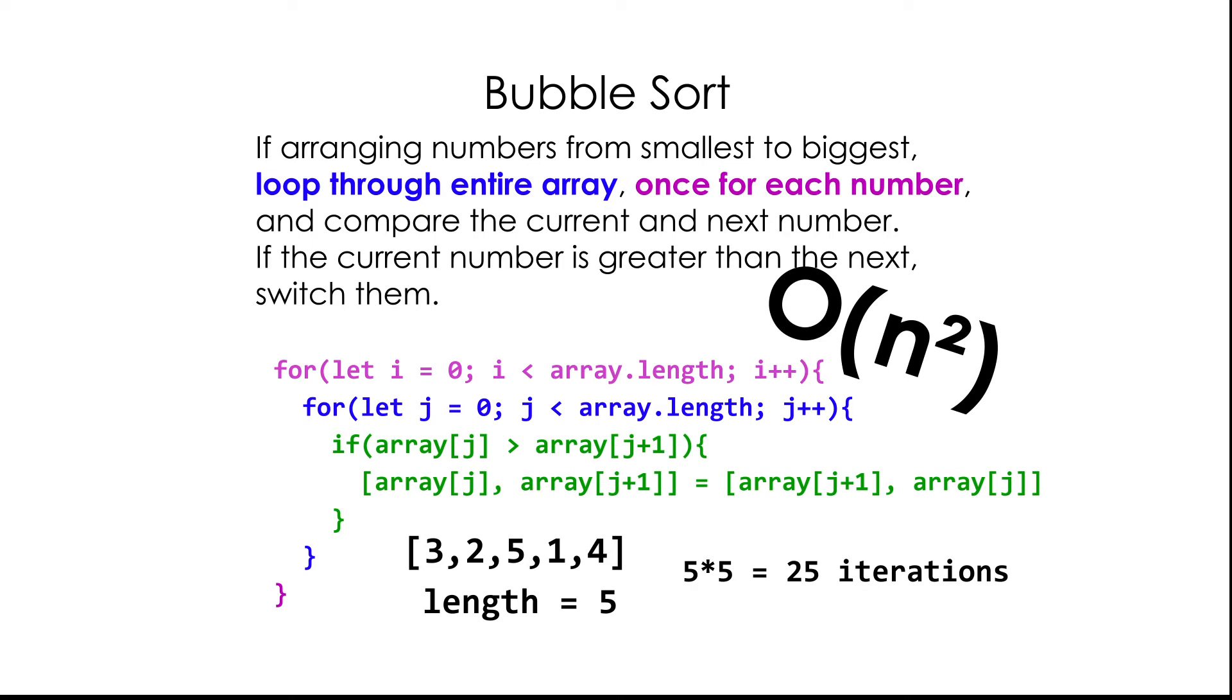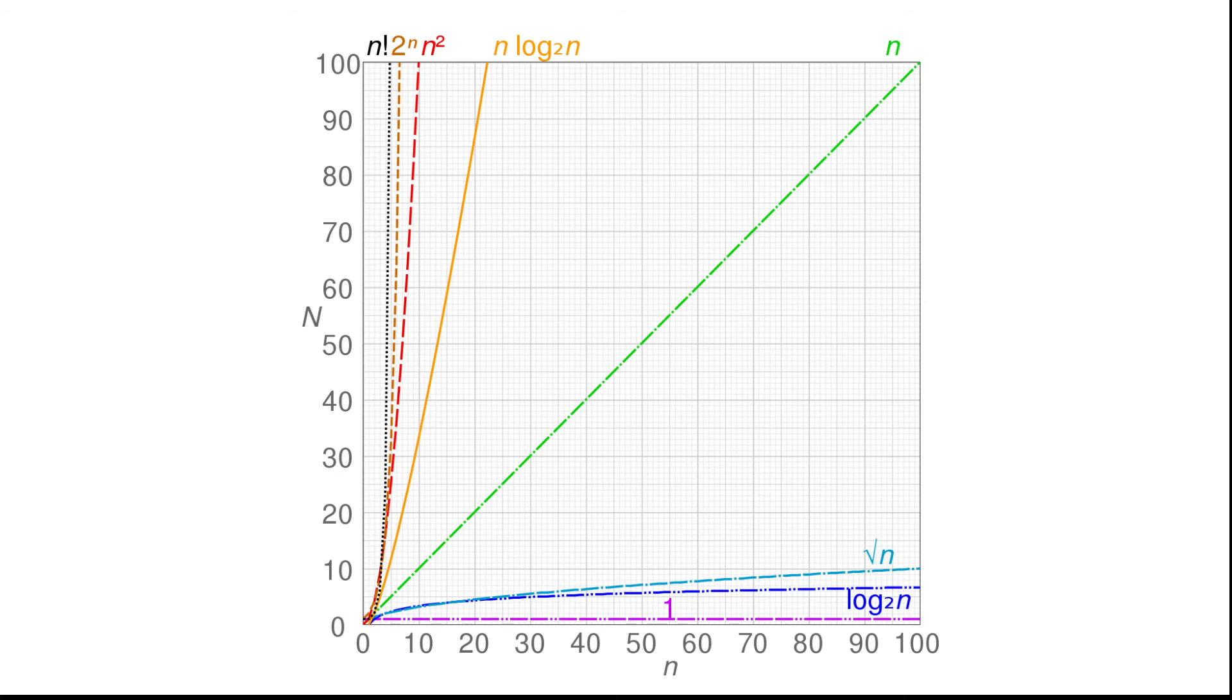And in this case, it's O(n²), which is not good, because as the number of items in the array grows, the time it takes to solve it will grow exponentially. Okay, so there's a graph representing that.